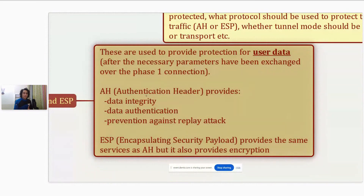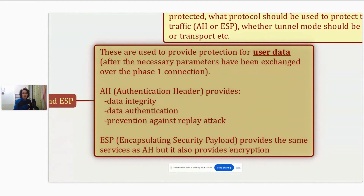Then AH and ESP come into picture, used to provide protection for user data — not for peer-to-peer communication, but for actual user data. The difference between AH and ESP is that AH, or Authentication Header, provides data integrity, data authentication, and prevention against replay attacks. ESP, which stands for Encapsulating Security Payload, provides all the same services as AH but also adds encryption. That is why in just about all real-life scenarios, you will see ESP being used rather than AH.